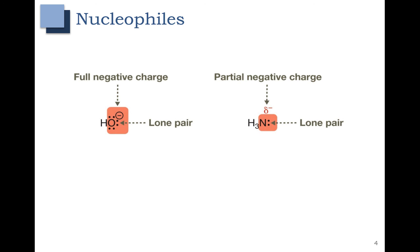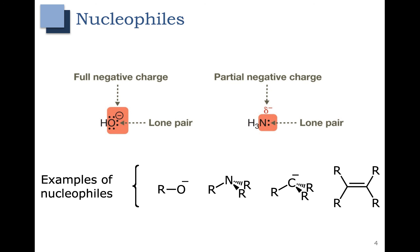Now let's take a look at nucleophiles. Nucleophiles are going to be electron rich and looking for something that is electron positive. Things like hydroxide that have a full negative charge are going to be good nucleophiles. Also things that have δ− like NH₃ are going to be good nucleophiles. We can also imagine a methyl group as the R group, and any amine with different R groups is also going to be a good nucleophile.